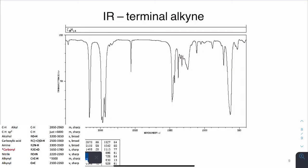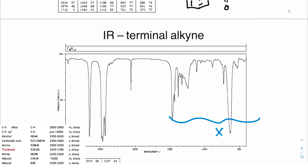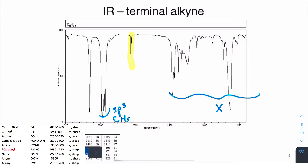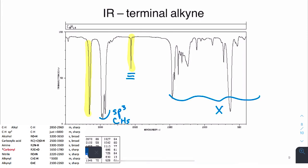Stop the video before continuing for this next example. Ignore the signals in the fingerprint region. There are the sp3 hybridized CHs, and then two other key peaks to consider. One of the only things that comes in the middle of the spectrum like this are triple bonds. The CC and CN triple bonds appear here.